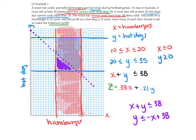We can see the corner points of the feasible region. There's a corner point at (10, 20), a corner point at (10, 28), and another corner point at (18, 20). That defines our shaded feasible region right here.